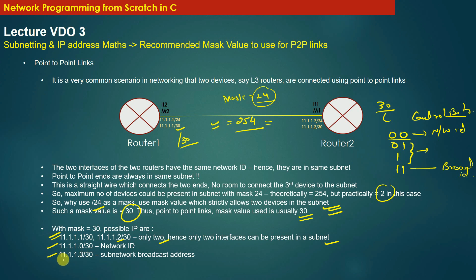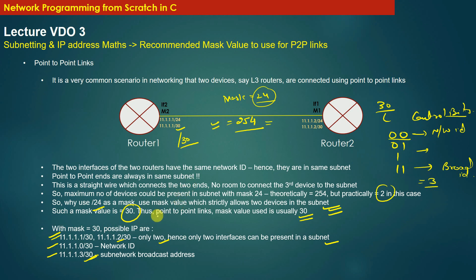You have one network ID and one broadcast address. The broadcast address is 11.1.1.3/30. The reason you get 3 here is because the two control bits are both 1, and binary 11 corresponds to 3. So using mask value /30 strictly allows only two IP addresses to be assigned to the two ends of the link, with one network ID and one broadcast address as usual.